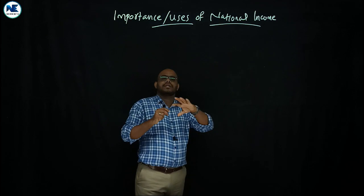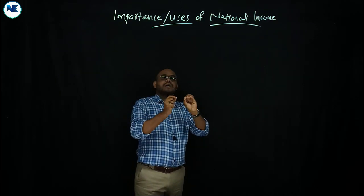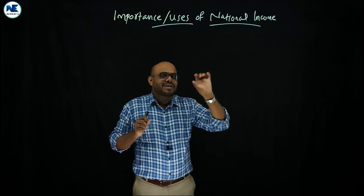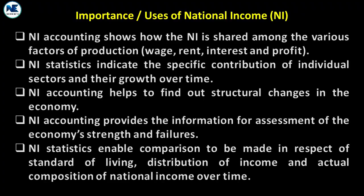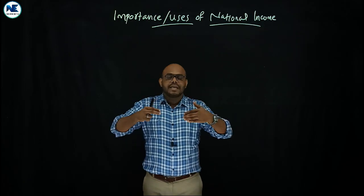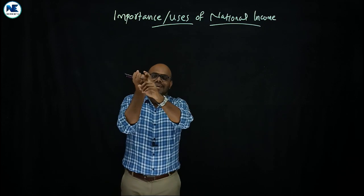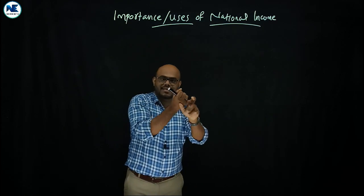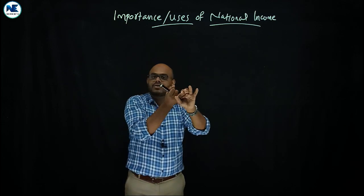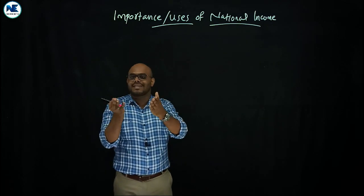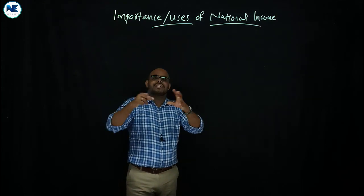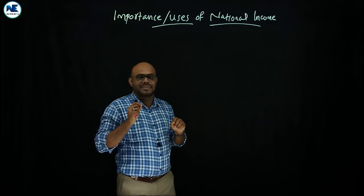First point: you can understand the factor payments among the four factors of production — this is measured using the income method. Second point: national income statistics indicate the specific contribution of individual sectors and their growth over time. Broadly, there are three sectors in an economy: the primary sector (agriculture and allied), the secondary sector (industry and manufacturing), and the tertiary or service sector.